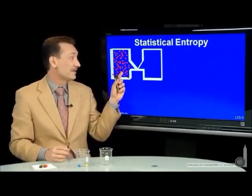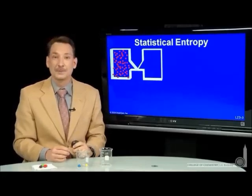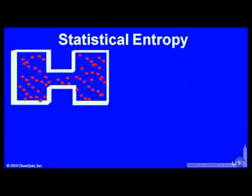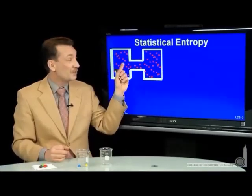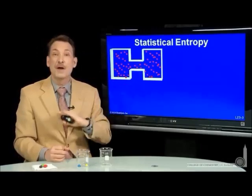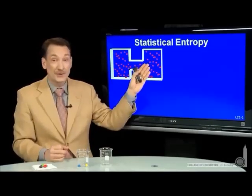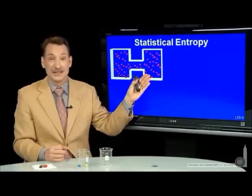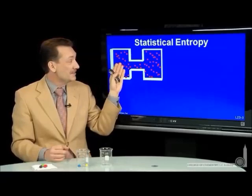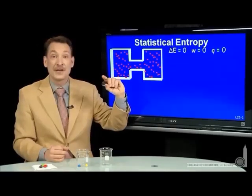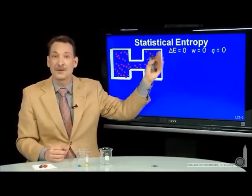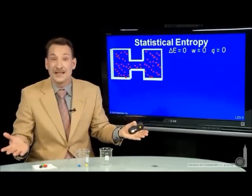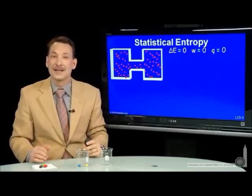Let's look at this physical process. This is a gas, and we're going to let it expand into a vacuum. We know this goes naturally — we never notice the gas compressing itself back to one side. When this process goes, expanding against a vacuum, no work is done. It's an isothermal process. No heat is absorbed or released, no energy changes. This process has three thermodynamic parameters — the energy change, the work, and the heat — all zero. There's no indicator among our thermodynamic parameters that this process will even proceed.